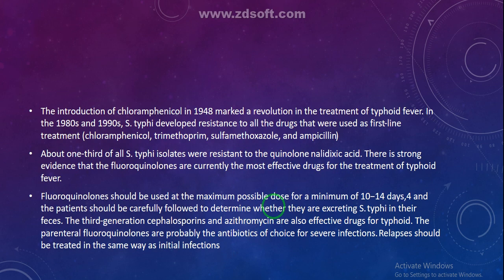Treatment with chloramphenicol was introduced in 1948, marking a revolution in typhoid treatment. In the 1980s and 1990s, Salmonella typhi developed resistance to all first-line drugs: chloramphenicol, trimethoprim, sulfamethoxazole, and ampicillin. About one-third of all Salmonella typhi isolates were resistant to the quinolone nalidixic acid. There is strong evidence that fluoroquinolones are currently the most effective drugs for typhoid, though some strains have also developed resistance to these antibiotics.